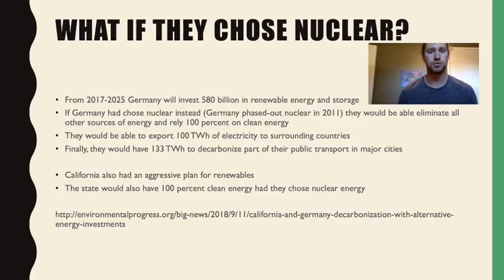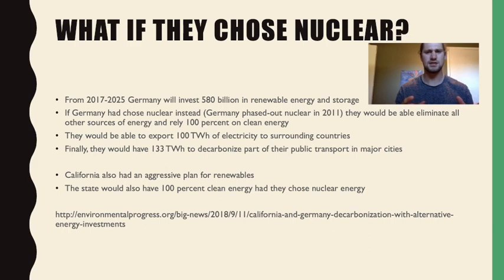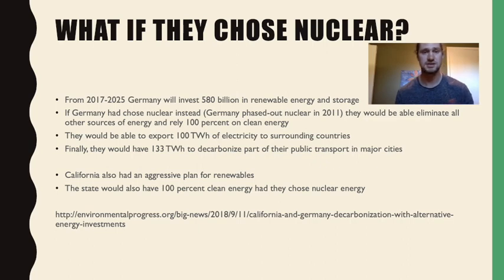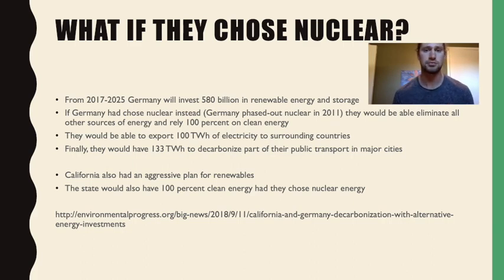A study linked below looks at California and Germany and performs a cost analysis between solar and wind versus nuclear. It shows that nuclear energy is much more efficient at decarbonizing, mainly because it provides more energy more reliably. The study shows that if Germany and California had put their renewable investment money into nuclear instead, they would have had far more than enough clean energy for all their needs, and Germany would even have had excess to export or use in public transport.